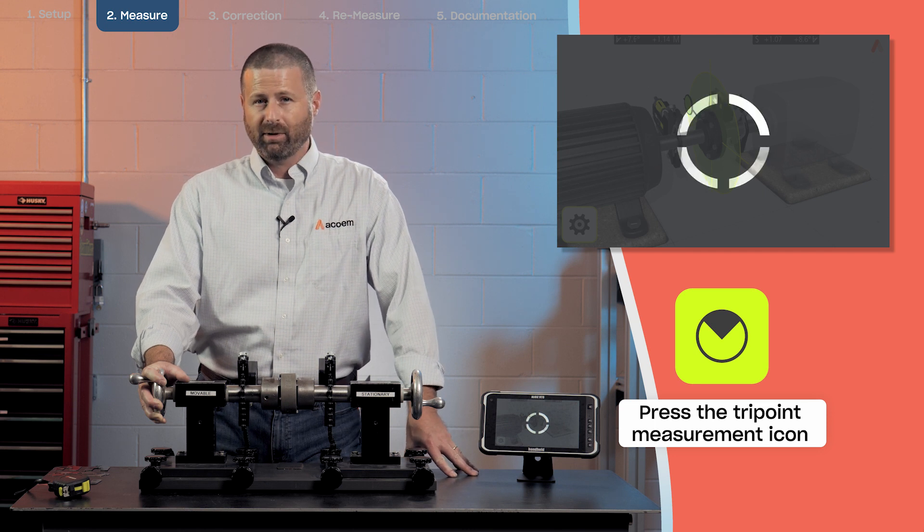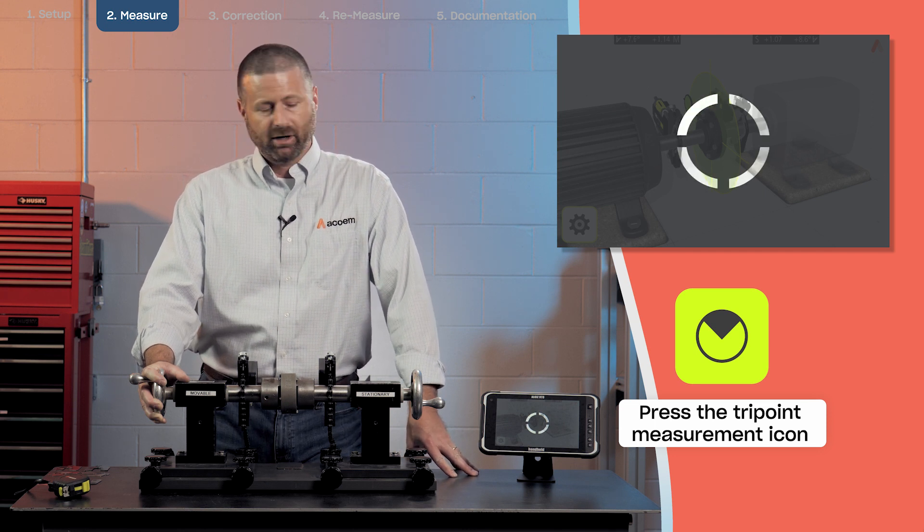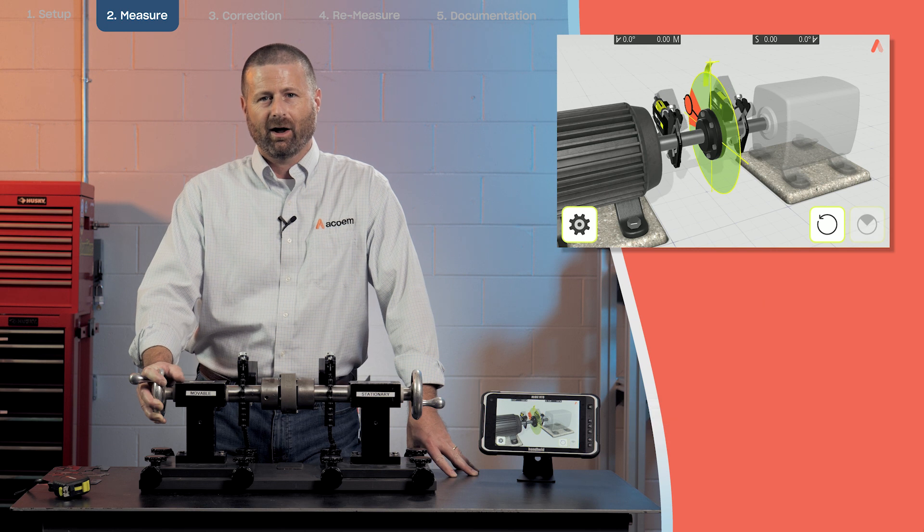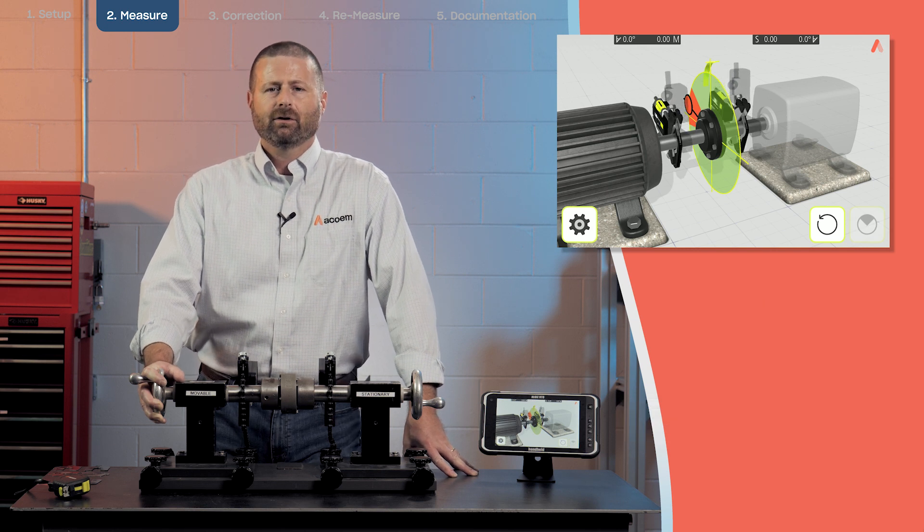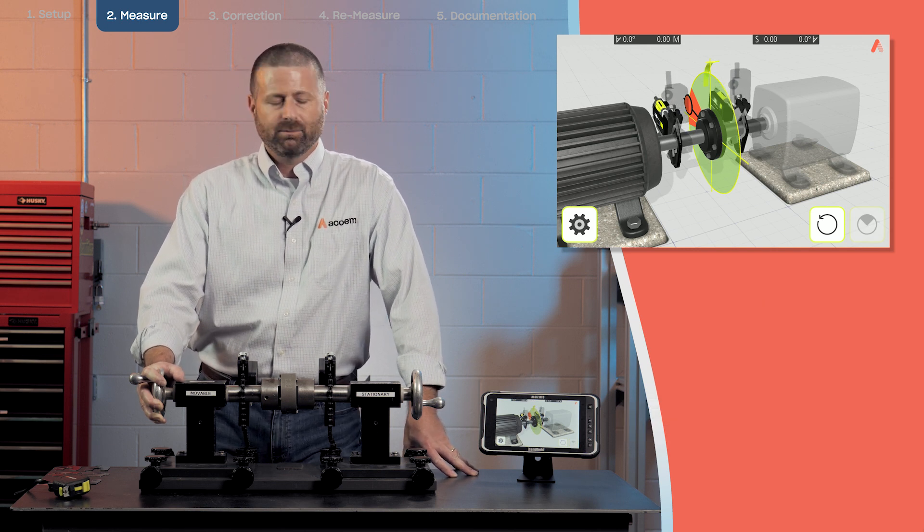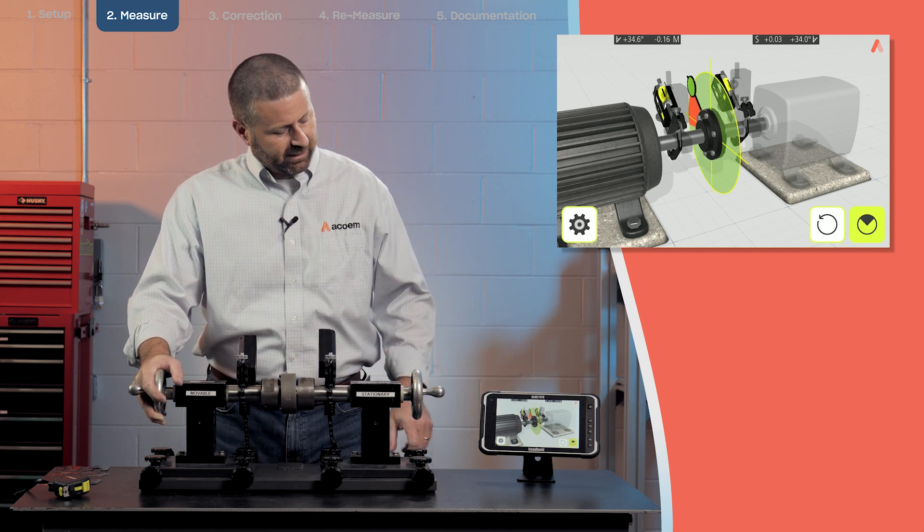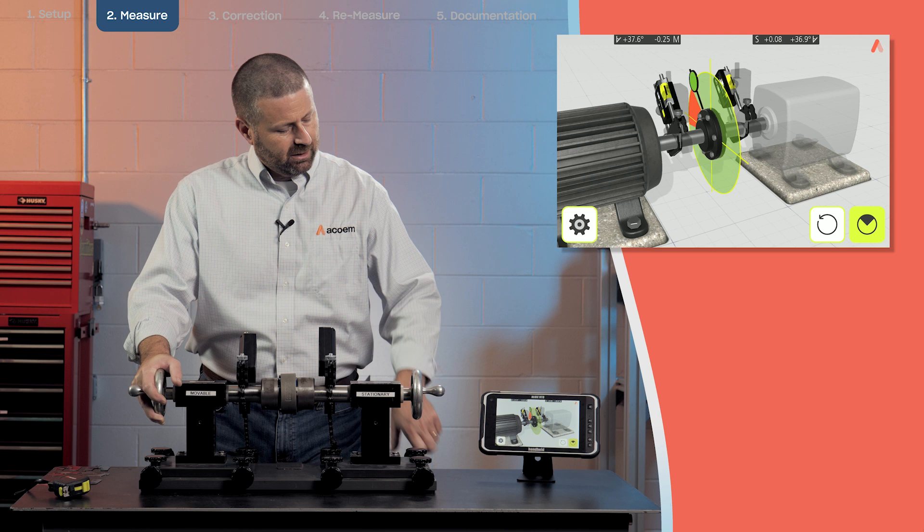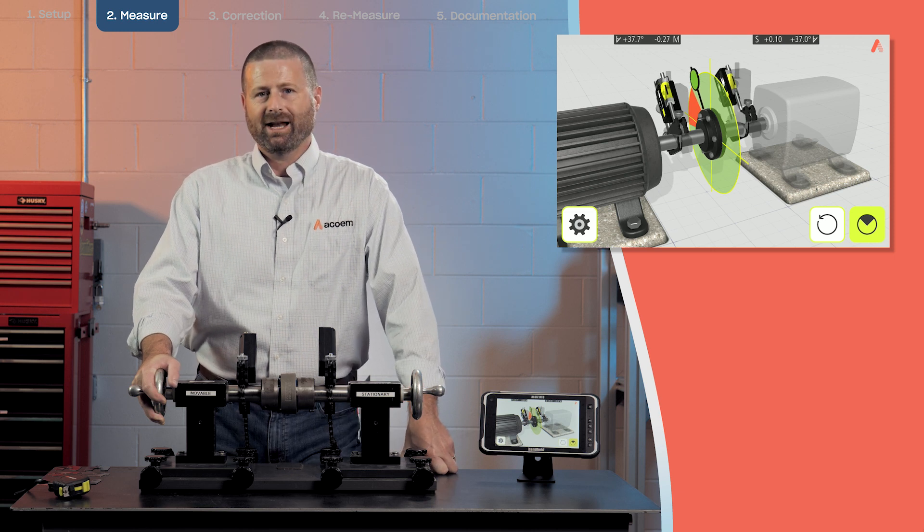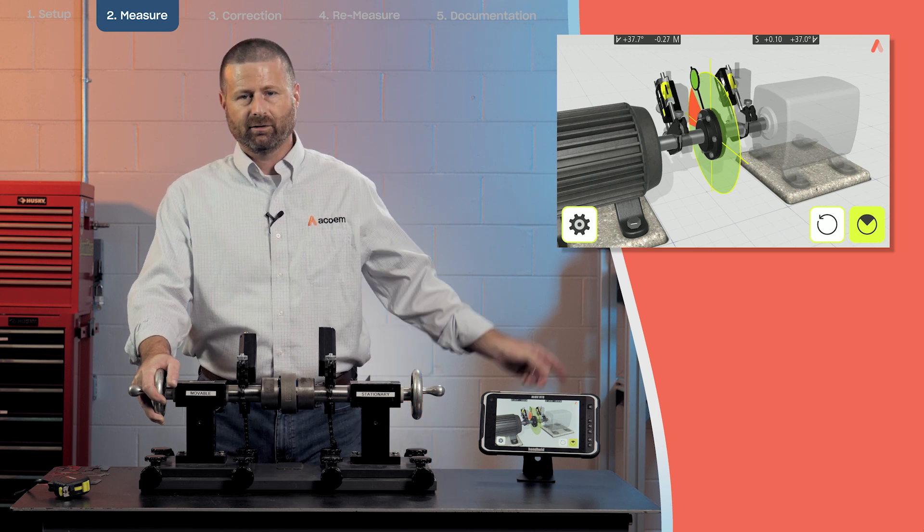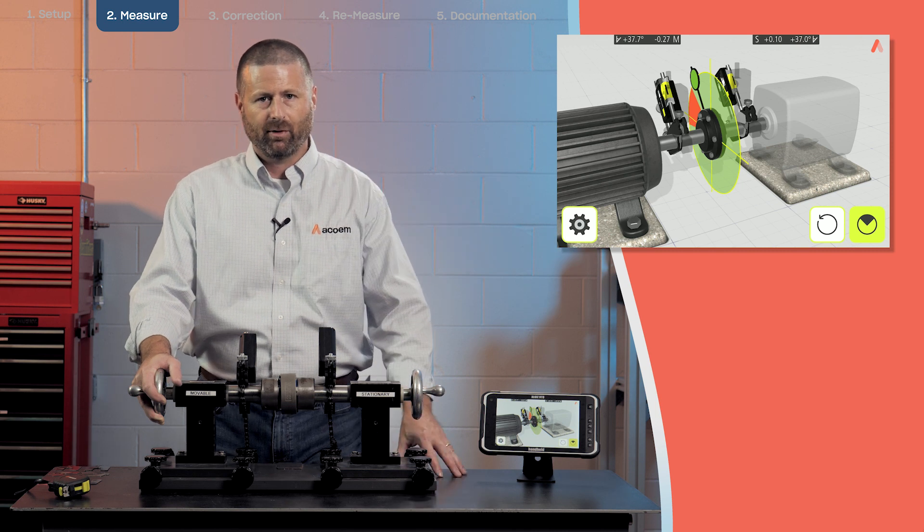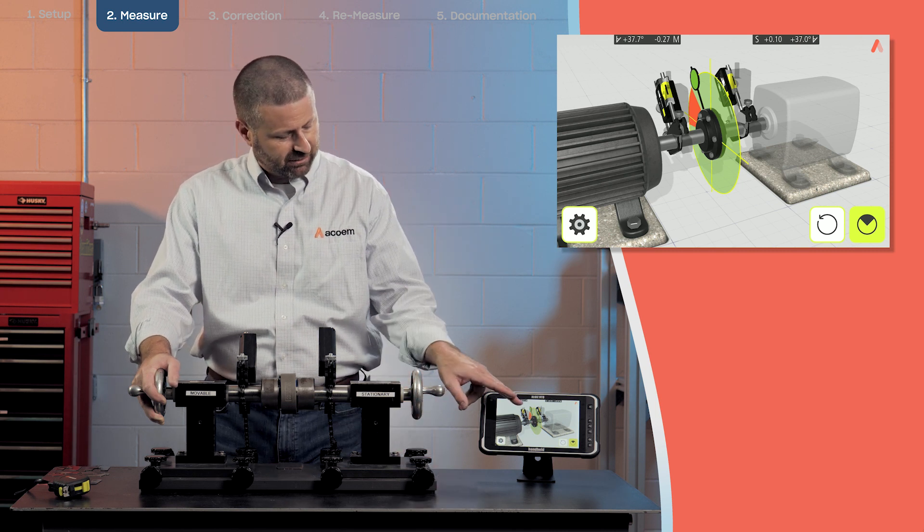Measurement icon in the bottom right looks like a pie chart. This is our tri-point measurement method, which means that you can start anywhere and stop anywhere on the rotation of the shaft. There's no requirement to be at particular clock positions. To get to the next measurement location, you simply have to rotate outside the red zone.